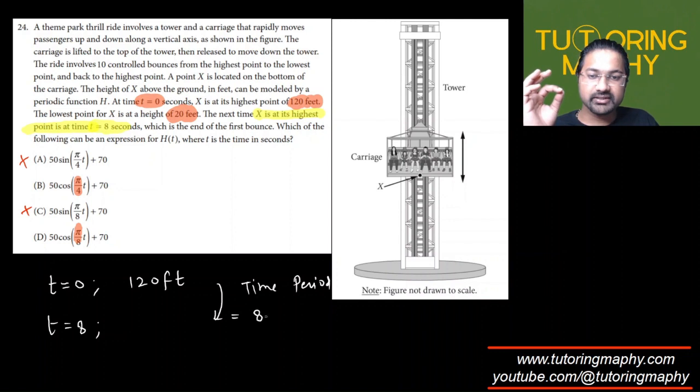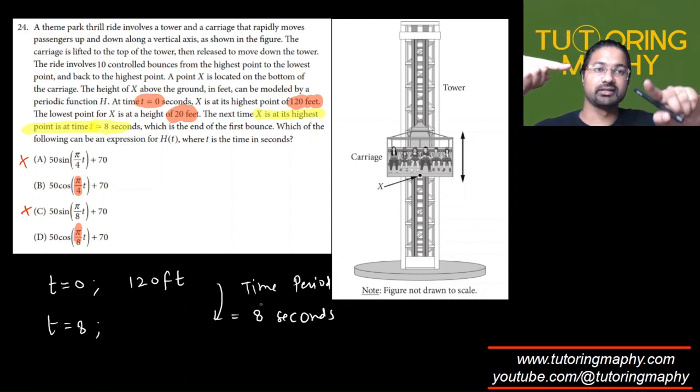It makes perfect sense because it is maximum here at t equals 0, then it takes a ride like this, and then it is maximum once again at this point, which happens after 8 seconds. So 8 is the time period.